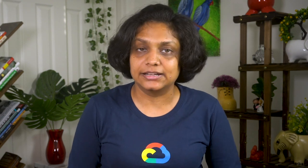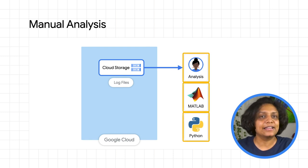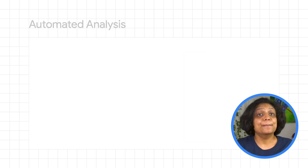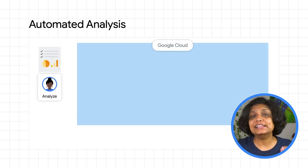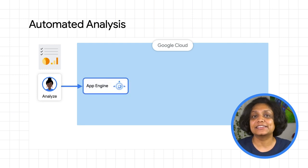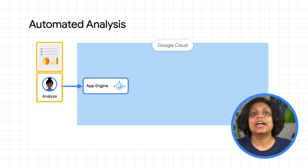Now let's talk about data analysis. The engineers had two ways to analyze the data. Manual lookup, which is downloading the file to their computer, loading it into MATLAB or using a Python program, and running their own analysis scripts. But with a project like this, there needs to be a well-defined, consistent analysis that could run over and over on all the flight data. For that, they built a data analytics frontend on App Engine, where an engineer would submit a request for all the logs in a particular time range and analyze them with predefined criteria.